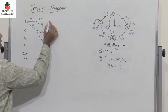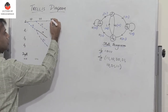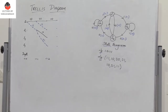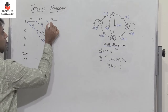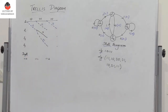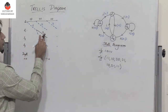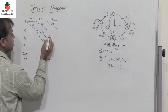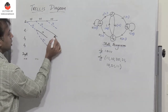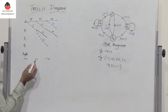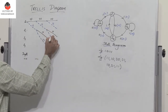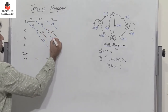If I am at s0 and the input is 0, I go to s0 with output 0,0. If I am in s0 and the input is 1, I go to s1 with output 1,1. We have already done that. Now if I am in state s1 and input is 0, I go to s2 with output 1,0. And if I have input 1, I go to state s3 with output 0,1.